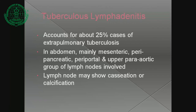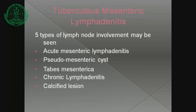Tuberculous lymphadenitis accounts for about 25% of cases of extra-pulmonary tuberculosis. In the abdomen, mainly mesenteric, peripancreatic, periportal, upper portal, and aortic groups of lymph nodes are affected. Lymph nodes may show caseation or calcification. Tuberculous mesenteric lymphadenitis has five types of lymph node involvement: aqueous mesenteric lymphadenitis, pseudomesenteric cyst, tabes mesenterica, chronic lymphadenitis, and calcified lesion.